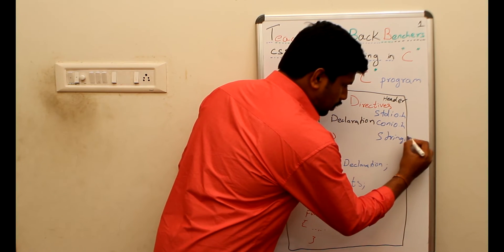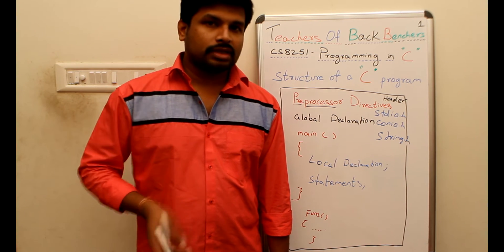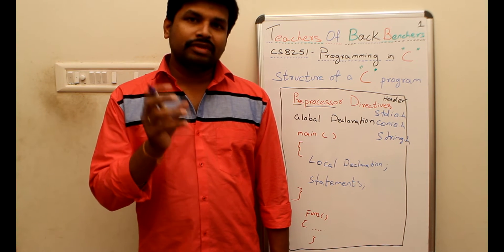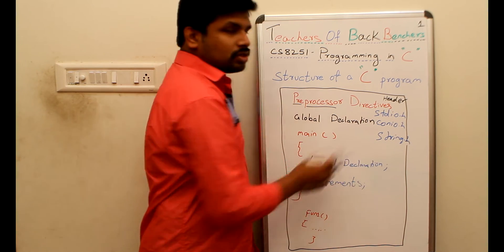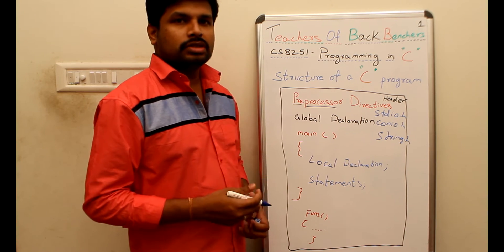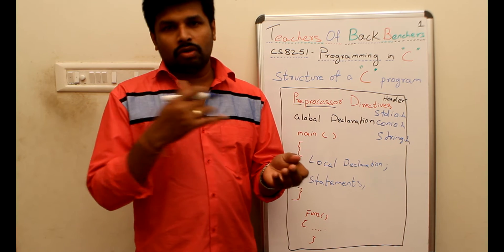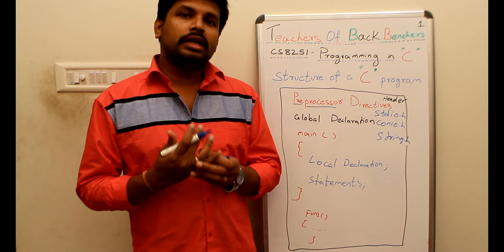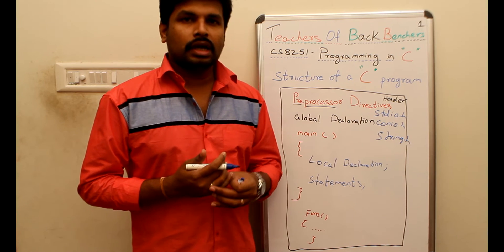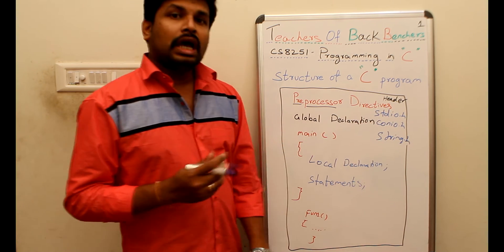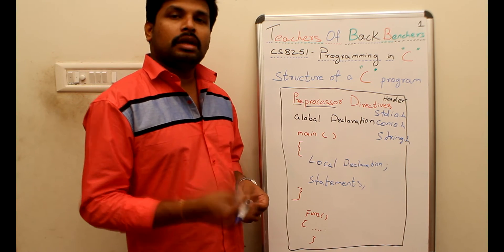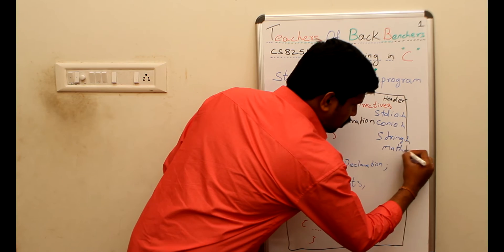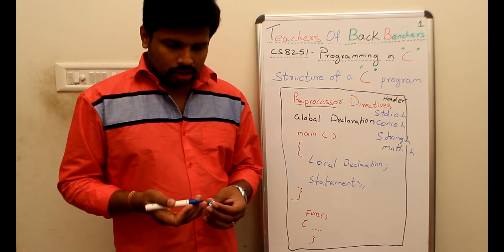For example, string.h — there is a string application. A collection of alphabets is called a word, and a collection of characters is called a string. If you work with strings, there are many functions. We can save the string.h file. So we have stdio.h, conio.h, and string.h. There are also mathematical notations that we can calculate in a C program. For mathematical expressions, the header file is math.h.